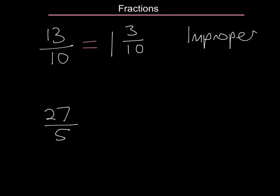Let's look at the next one. 27 divided by 5 gives me 5 times and 2 remainder. So 27 fifths is the same as 5 whole things and 2 fifths.